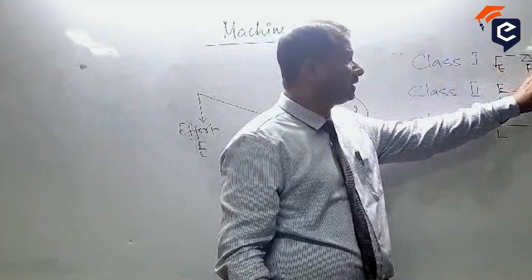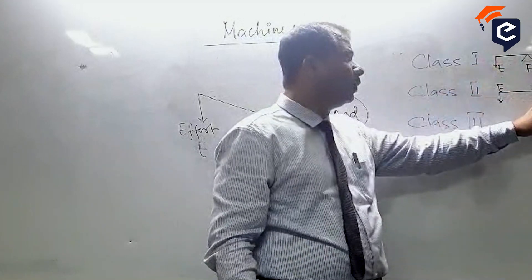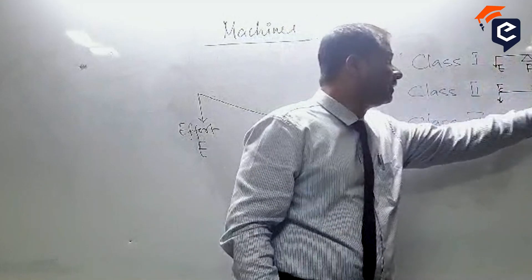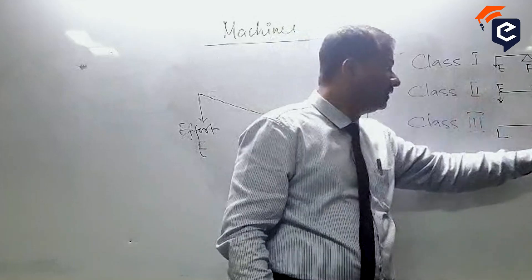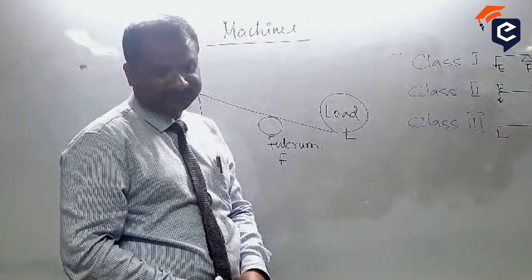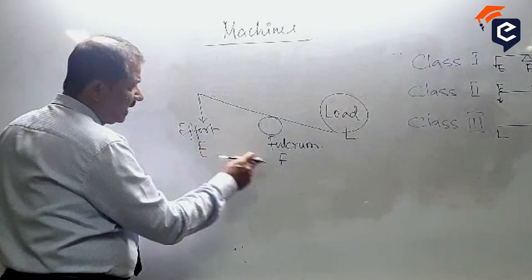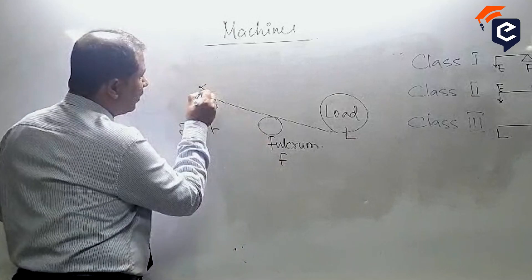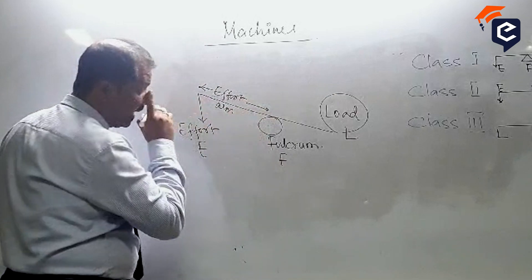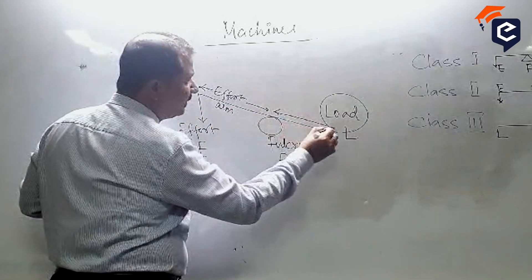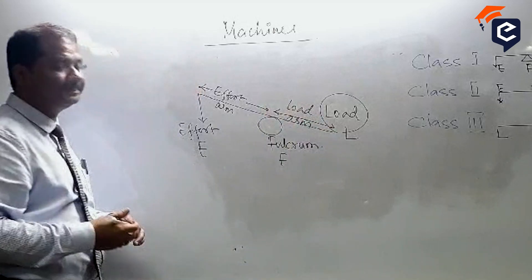Class 1: fulcrum in center, load and effort on either side. Class 2: load in center, fulcrum and effort on either side. Class 3: effort in center, fulcrum and load on either side. Now, the distance between effort and fulcrum is called effort arm, and the distance between fulcrum and load is called load arm.